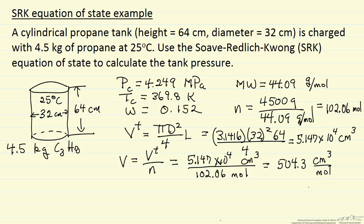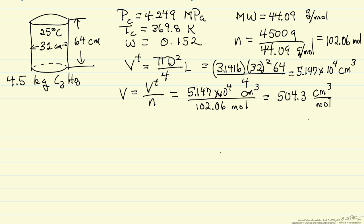So now I'm ready to use the SRK equation of state. And what that equation of state says is the pressure equals gas constant times absolute temperature over the volume per mole minus a constant, and then multiplied by two other constants, and divided by volume per mole and then volume per mole again plus this constant B. We have three constants that we have to calculate.